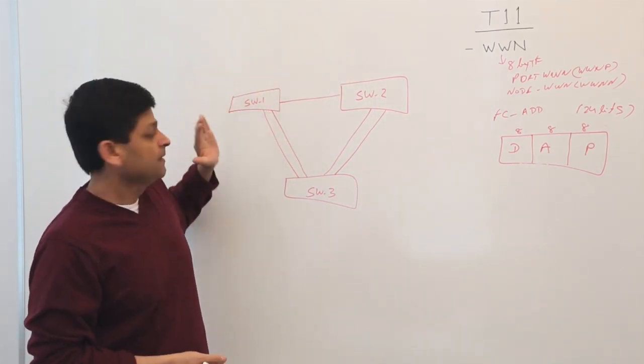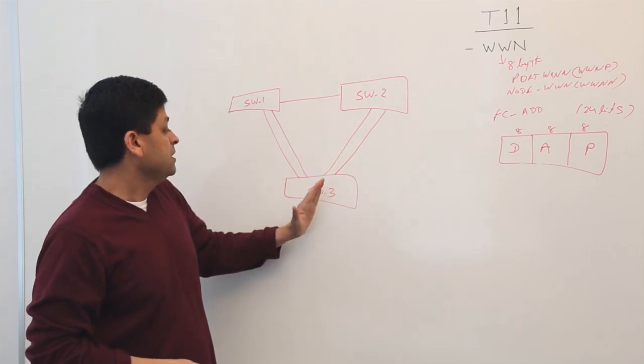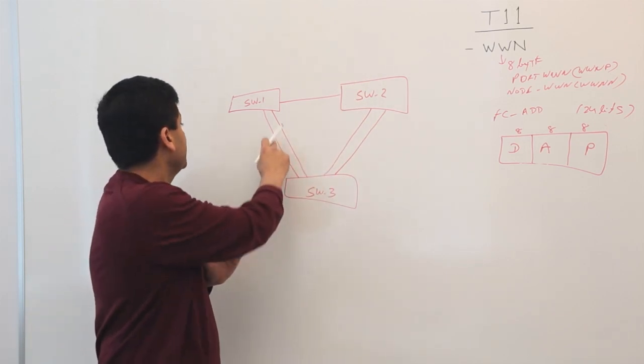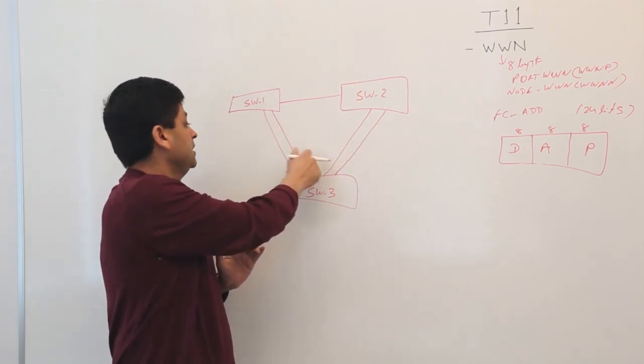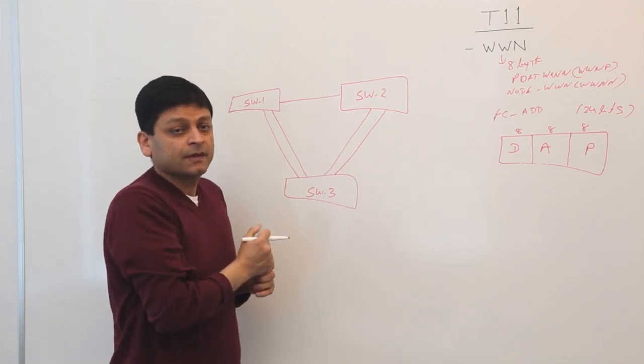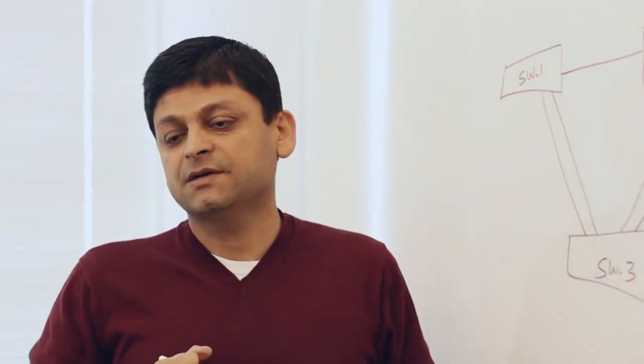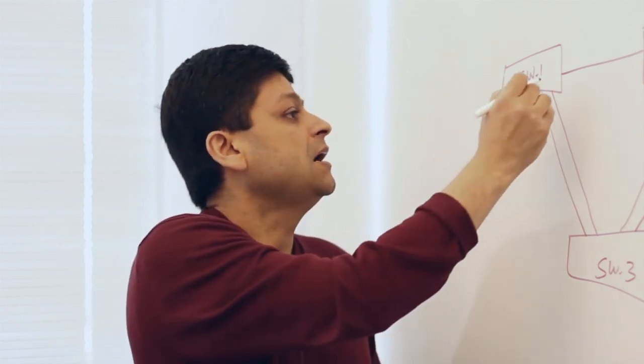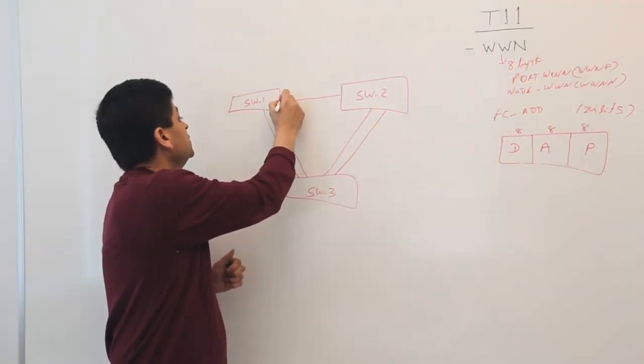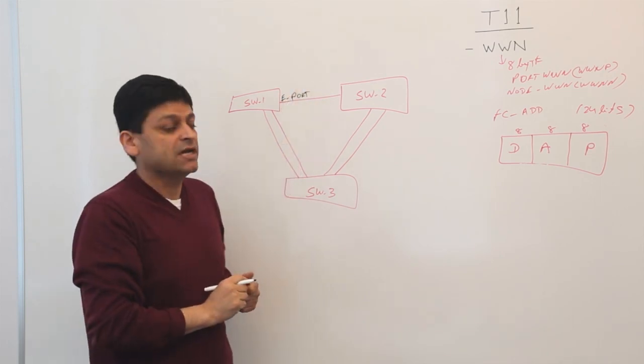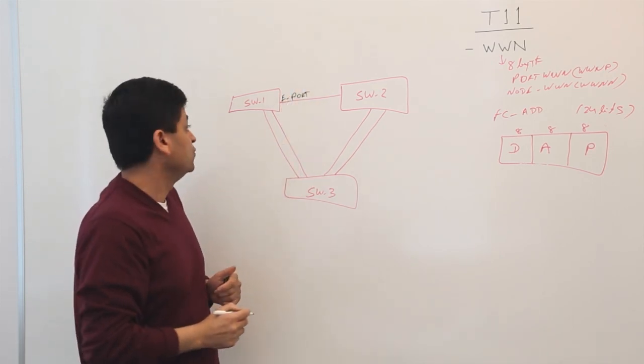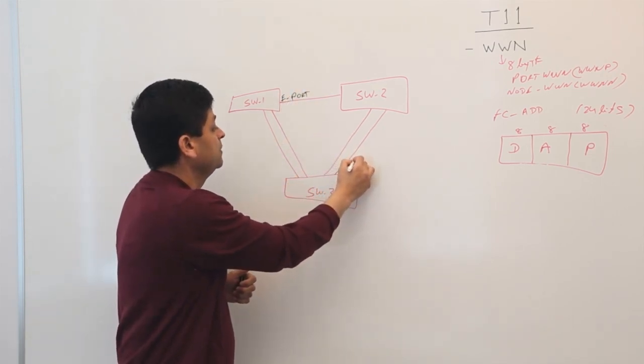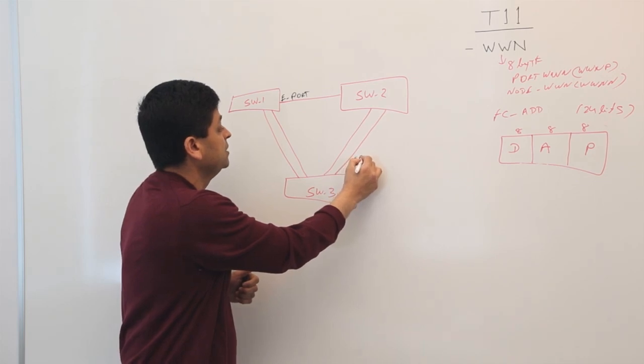Here you can see we have switch one, switch two, and switch three connected with a bunch of links. In the previous video we talked about N port and E port. E ports are the links which are connecting the switches together, the inter-switch links as we would call. So this is an E port. These are basically all E ports.